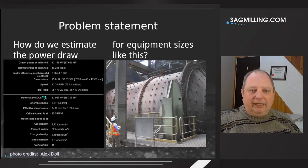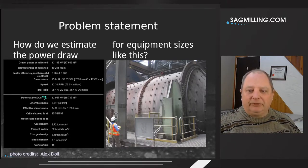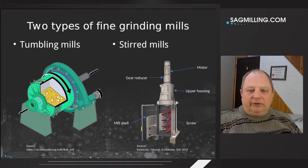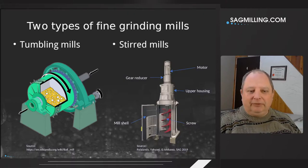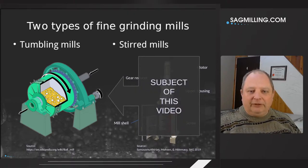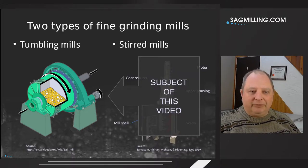So how do we as designers or as operators estimate what the power draw should be for an industrial grinding mill? There are two types of grinding mills typically seen in the industry, and this video is specifically dealing with the tumbling mills. We're not dealing with the vertical mills or the stirred mills.